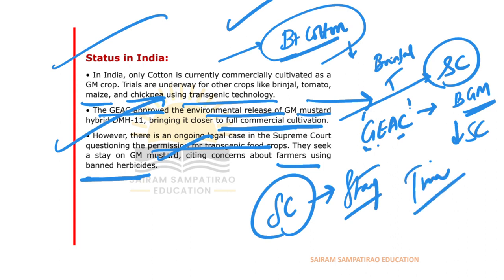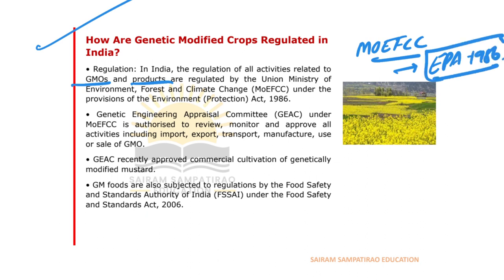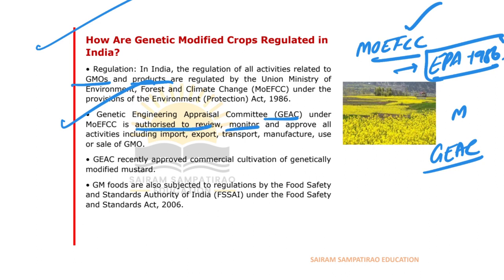In India, the regulation of GM crops and products is done under the Ministry of Environment, Forest and Climate Change under the Environmental Protection Act of 1986. The Genetic Engineering Appraisal Committee (GEAC), under the Ministry of Environment, is authorised to review, monitor, and approve all activities related to imports, exports, transportation, manufacturing, use, and sale of GMO crops.